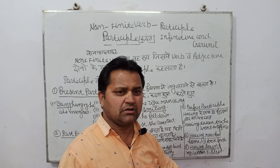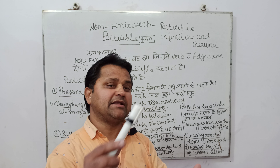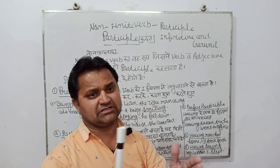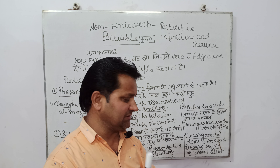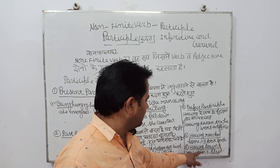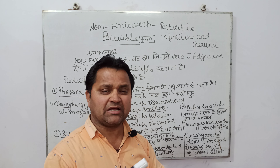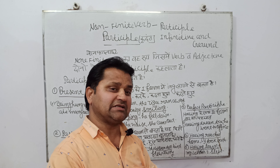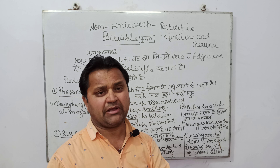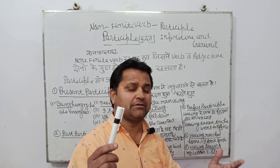Perfect participle mein 'having' ke baad third form ka prayog karte hain. Having reached home, I took bath — ghar pahunch kar maine isnaan kiya. Yaani pehle ghar pahuncha, uske baad isnaan kiya. This is perfect participle. Having learnt my lesson, I slept — apna lesson yaad karne ke baad main so gaya. Yaani pehle lesson yaad kiya, uske baad so gaya.